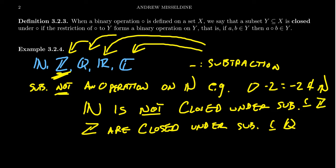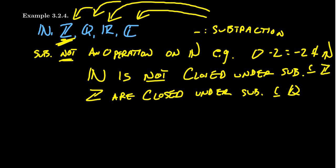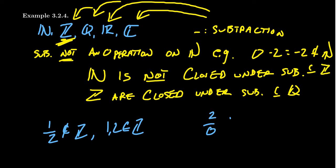What about division? When it comes to division, division is not an operation either, for some of the same reasons. For example, one divided by two is not an integer, even though one and two are integers. So you don't have closure under division if you're working with integers. You also have problems even with the rationals — if you take two divided by zero, this is not inside the rational field, even though two and zero are inside that set. So you have some issues there.